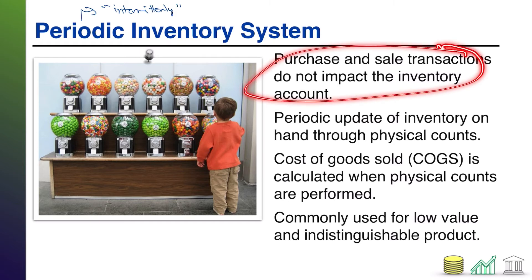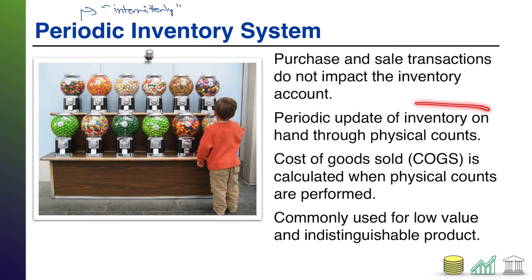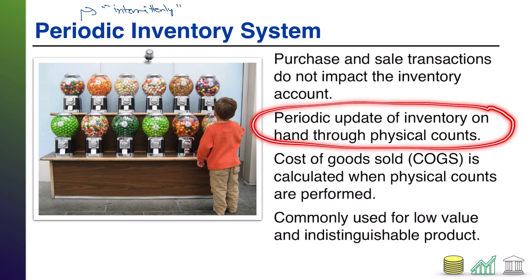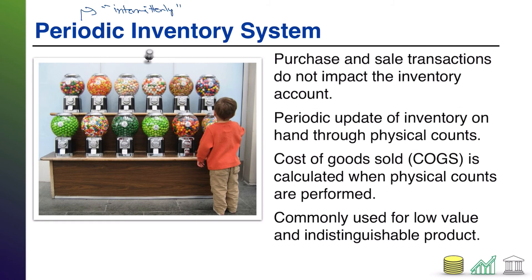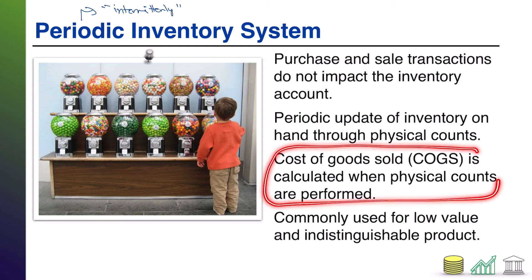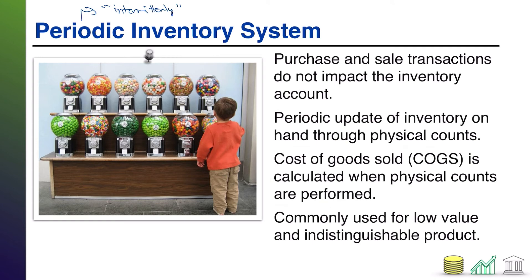Purchases and sales transactions do not impact the inventory account. At the end of your accounting period, you're going to do what's known as a physical inventory — you're going to physically go out, count what inventory is on hand, identify it up against the system. At that point, you're going to determine: what inventory did I start with? What inventory am I left with? And the difference between what you started with and what you're left with must be what you sold. So you just do one periodic adjustment at the end of the period.